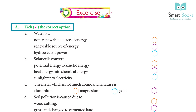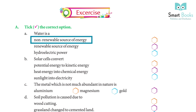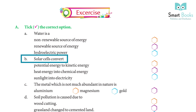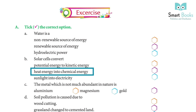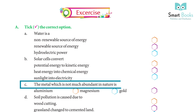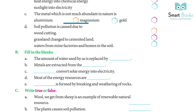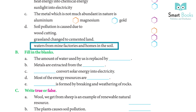Take the correct option. a. Water is a renewable source of energy. b. Solar cells convert sunlight into electricity. c. The metal which is not much abundant in nature is gold. d. Soil pollution is caused due to wastes from mines, factories, and homes in the soil.